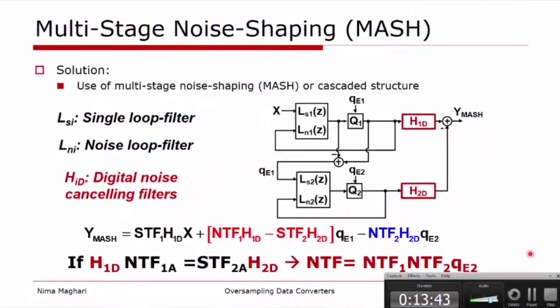There is another solution to this to remove the stability criteria by going to multi-stage noise shaping or cascaded modulators, thus employing multiple lower order loops and feed the quantization error of the first loop to the second loop. And here I'm showing a two-loop architecture and subtract the output via digital filters.